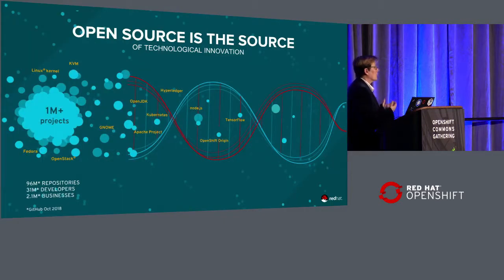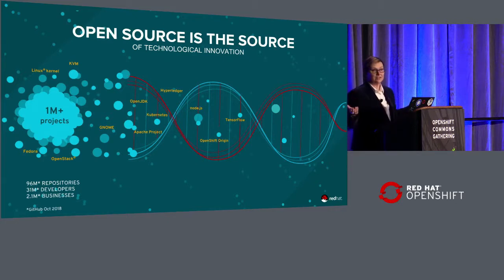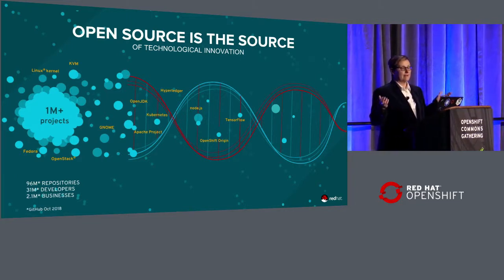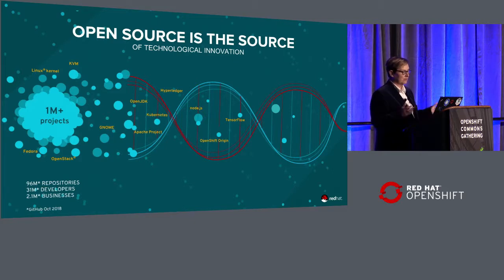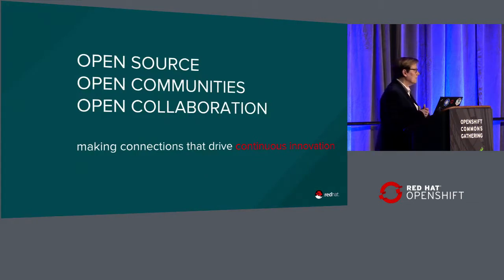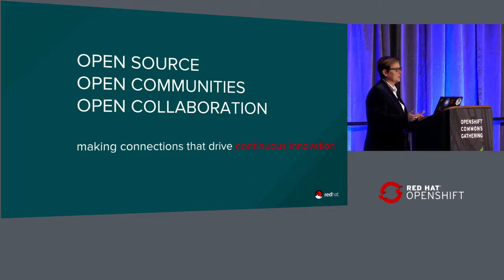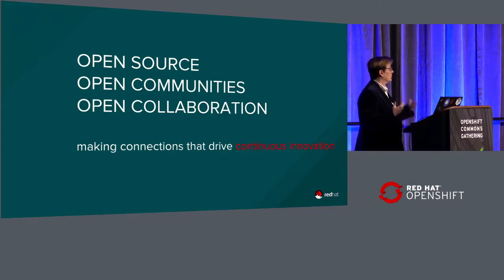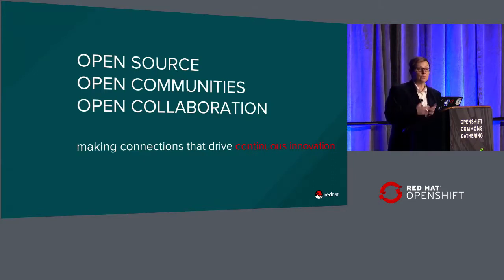I want to explain a little bit about where we're at and what the OpenShift Commons is all about. If you know Red Hat, and I suspect you all do, you've seen this slide before. There are over a million plus open source projects, and we've been really pushing hard the message that open source and collaboration is where innovation happens. It's not just in the code — it's in the collaboration and the story sharing and the feedback and all of the information that we share with each other about best practices. That's really what's helping to drive the OpenShift Commons.